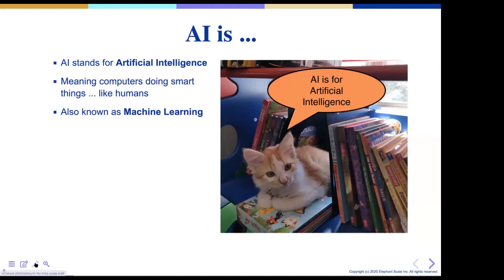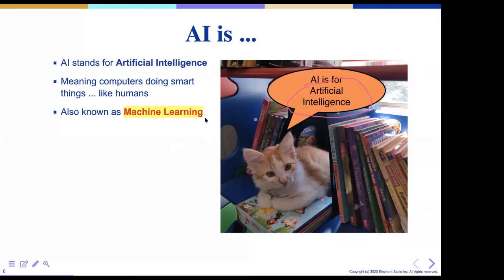Artificial intelligence — what does it mean exactly? It means computers getting to do really, really smart things. I'm going to show you guys what kind of smart things computers do and how they learn to do those smart things. Sometimes this is called artificial intelligence, and sometimes it's also called machine learning. Maybe some of your moms and dads work in this field already.